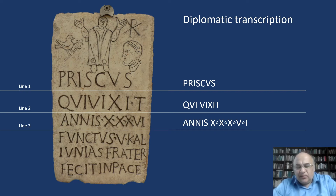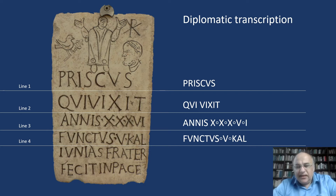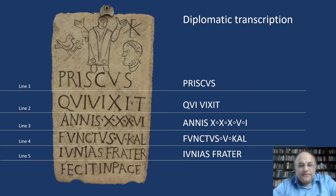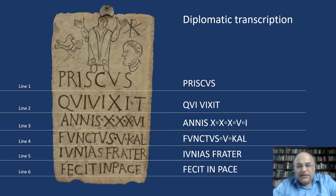Continuing the diplomatic transcription: also numbers VI, then in line 4 the letters F, V, N, C, T, V, S, V, K, A, L. The fifth line reads I, V, N, I, A, S, F, R, A, T, E, R. And in the last line F, E, C, I, T, I, N, P, A, C, E. So this is the so-called diplomatic transcription.